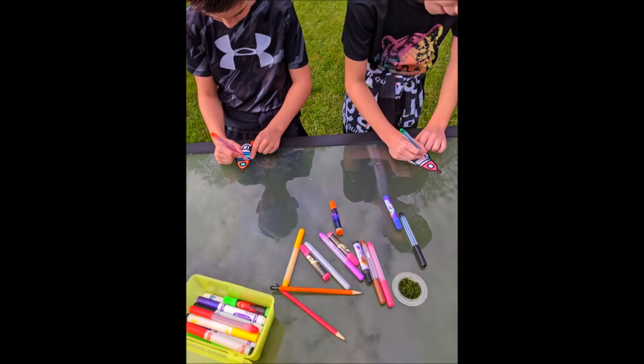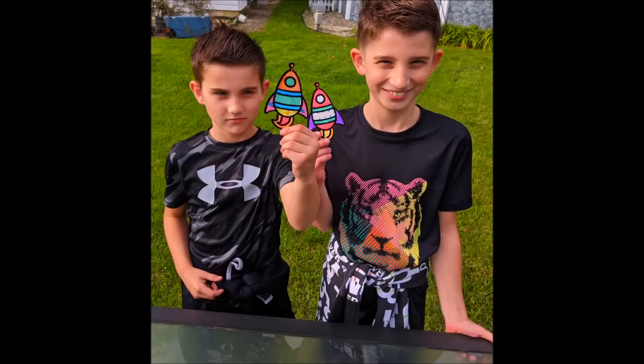For the first step you can either print out a picture of a rocket or draw and color one yourself. Make sure the cut picture is smaller than your straw. There is a link on the activity plan for one you can print and color.